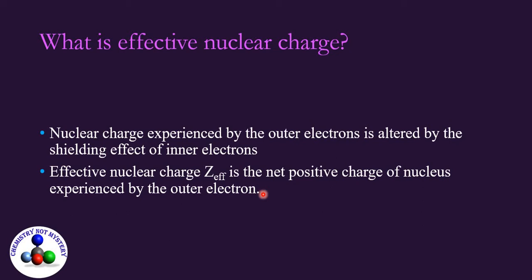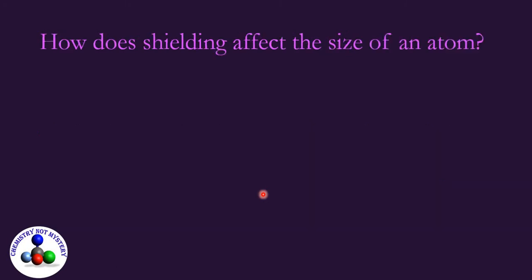Why does shielding effect matter? Actually it affects the size of atoms and consequently it influences the other periodic properties too. I will discuss it in my coming video. Here we see how does shielding affect the size of an atom. You know that the size of atom decreases across the period. But the contraction in size across the fourth period is larger than the third period.